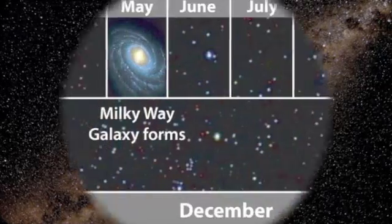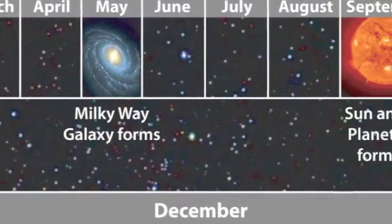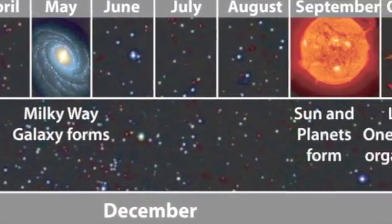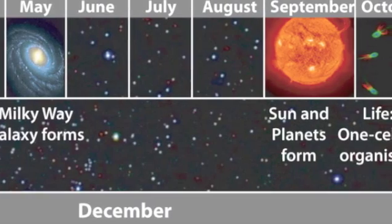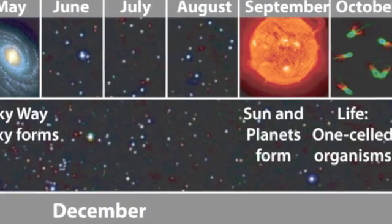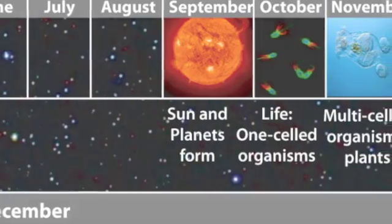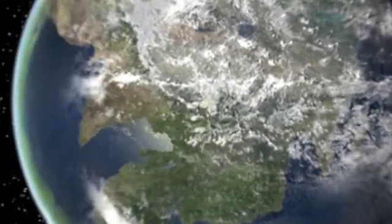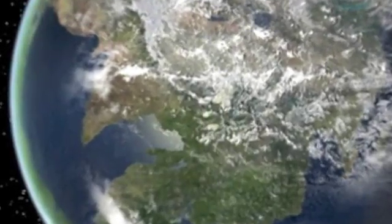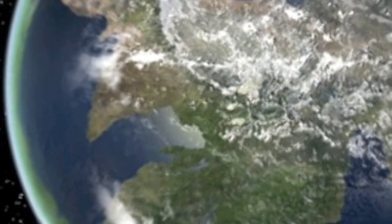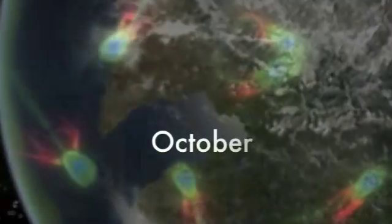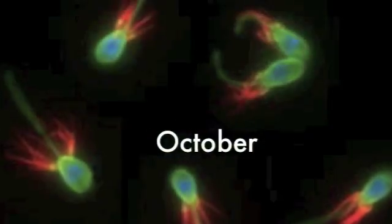June, July, and August pass with again nothing particularly significant. And then we hit September with the formation of our solar system. About a billion years later — a very short amount of time in cosmic time — in the next month, the first life, the first one-celled organisms emerge.